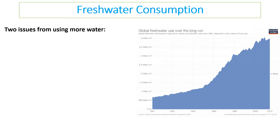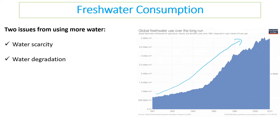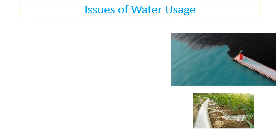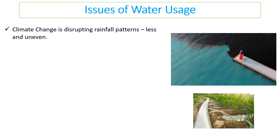Globally, water consumption has significantly increased as populations have grown. There are two main issues: water scarcity — the lack of available water — and water degradation, meaning water quality drops. The water deteriorates because we're polluting it and treating it badly, making it less suitable for use.